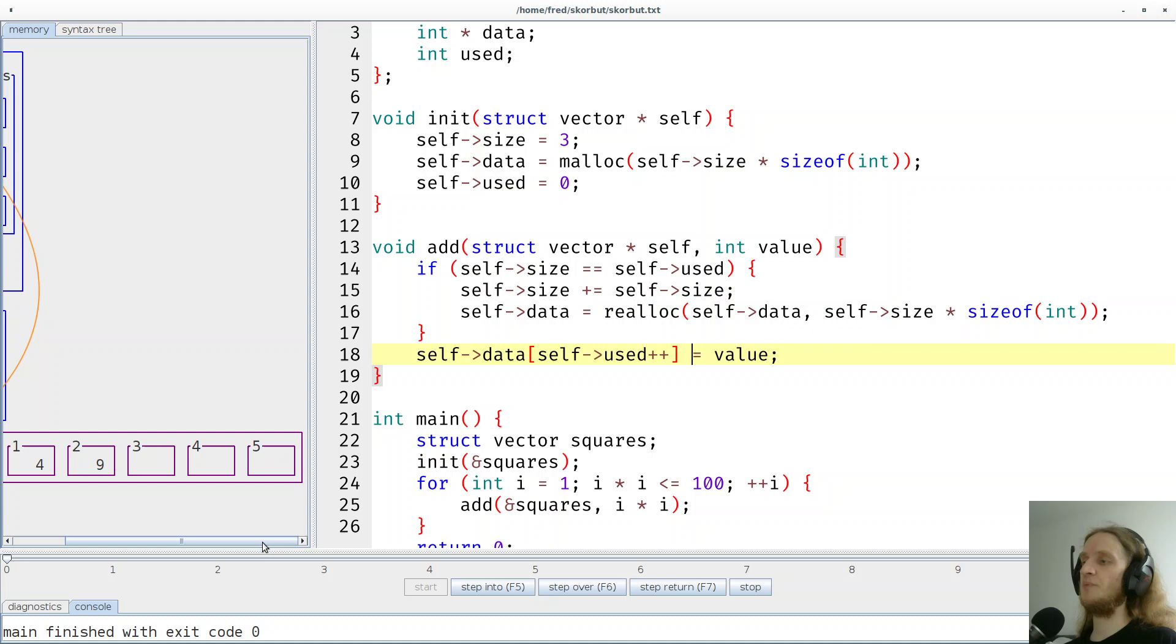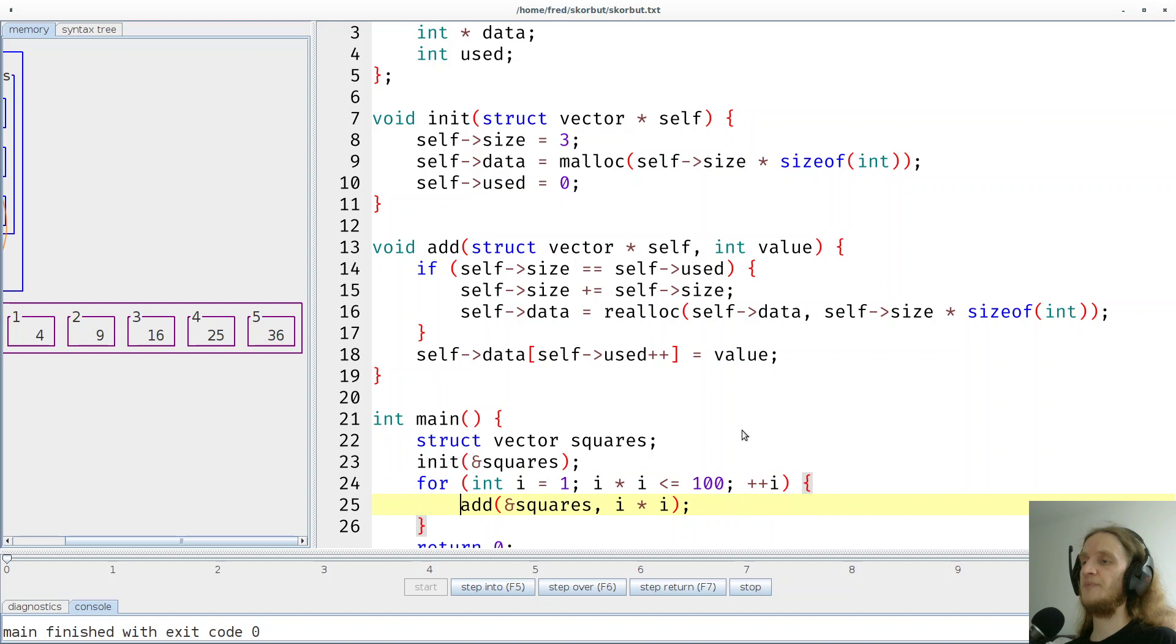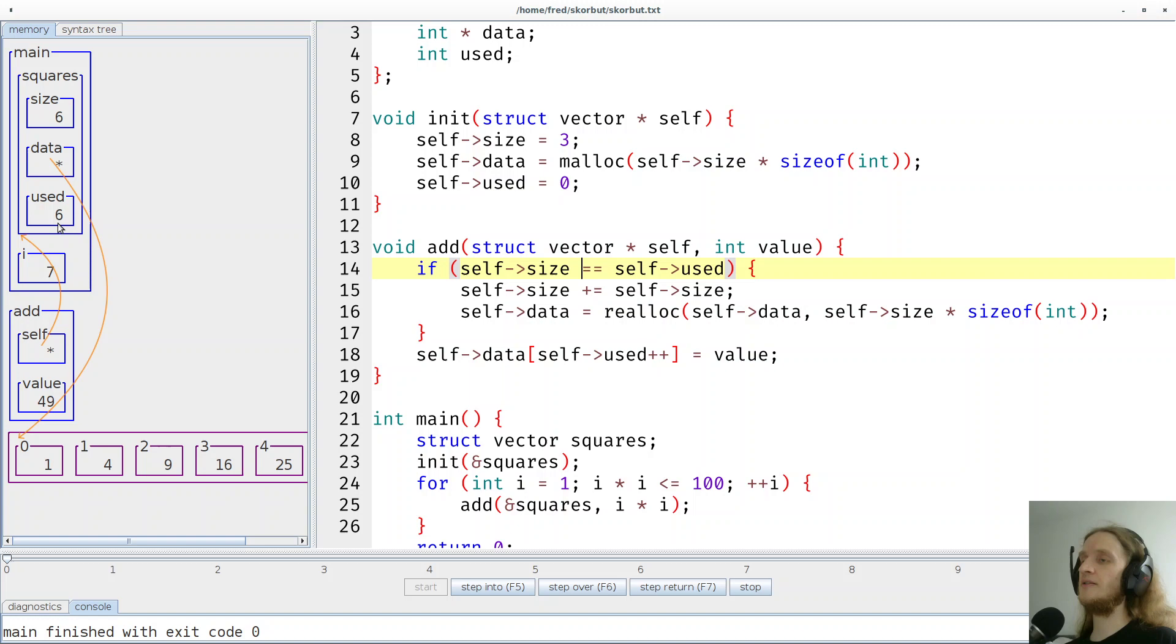So the 16 has enough space. So maybe let's put some more numbers in 25 and 36. And now we have a similar situation. We notice that 6 and 6 are the same. So we say we have to increase 6 to 12. And then we have to reallocate to make more space. And now we have space for up to 12 elements.